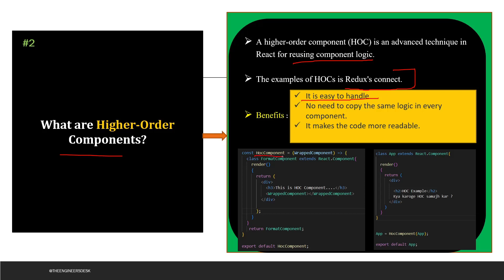Here is your HOC component. We are passing the wrapped component — you pass one component for which you want to use the logic. We have declared one component called app component that prints two statements. We are calling the HOC component and passing the app. When you call this, control goes inside the HOC component, which receives the app component. Since we are calling this the wrapped component, whatever component you pass will be used dynamically. It will print 'This is a HOC component' and then those two things.